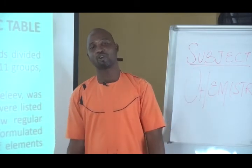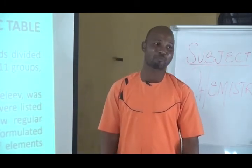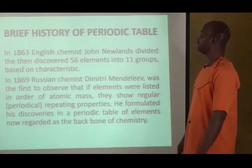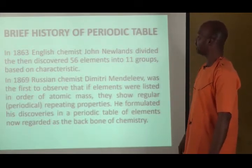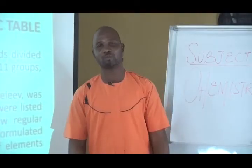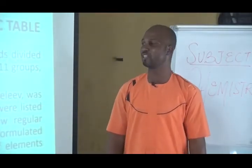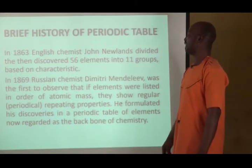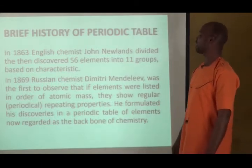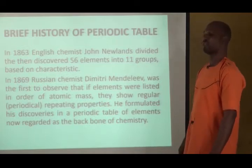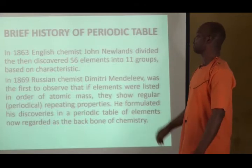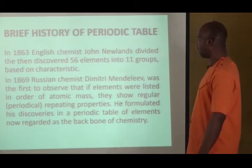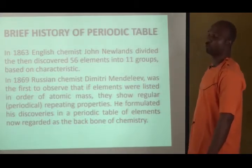I will start with a little introduction. So many scientists have tried to classify the elements. But prominent among them is in 1863, English chemist John Newland, who divided the then-discovered 56 elements into 11 groups based on their character. But the most pronounced scientist that did very well in the Periodic Table is the Russian scientist Dmitry Mendeleev. In 1869, he was the first to observe that if elements were listed in order of their atomic masses, they show regular or periodical or repeating properties.